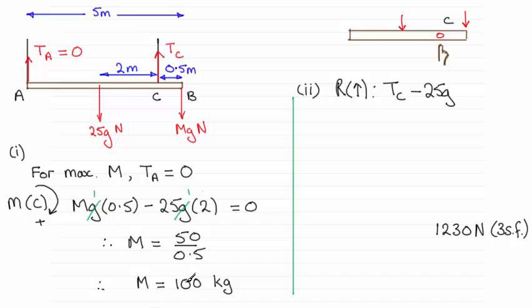And that's going to be equal to zero because there's no resultant force. So rearrange this and you end up with TC equaling 125G. If you take G as 9.8, you'll find that that comes out to 1225 newtons. Or if you round this up to three significant figures, you get 1230 newtons to three significant figures.